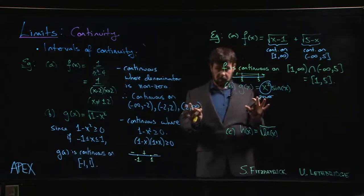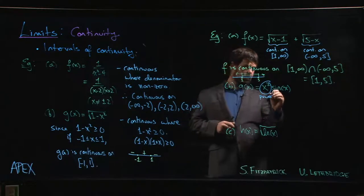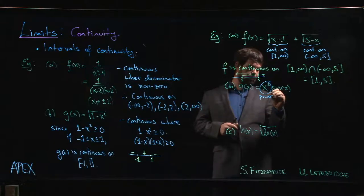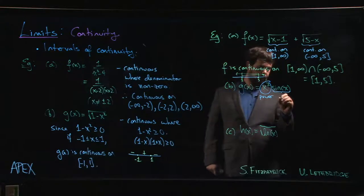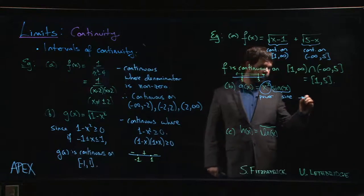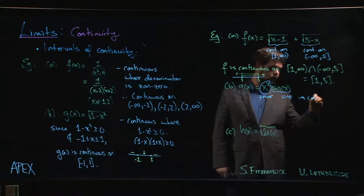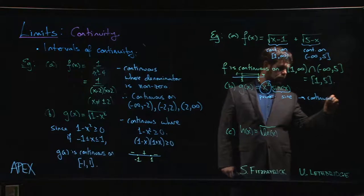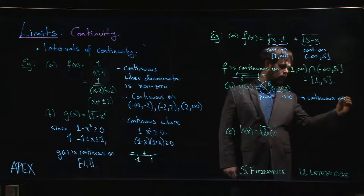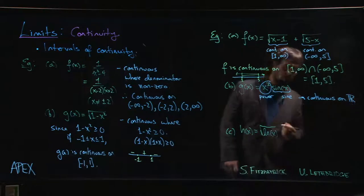Well we know that this is a power function, so in particular it's a polynomial, and we know that sine, so we know that both of these functions are continuous everywhere. So the sine function, and both of these are continuous on the whole real line.